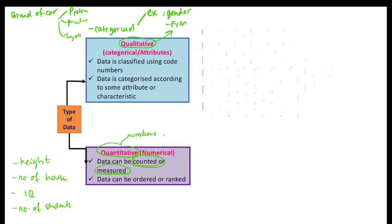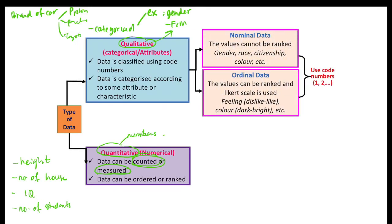Qualitative data can be divided into two types: nominal data and ordinal data. Nominal data consists of values that cannot be ranked. For example, gender — female and male — we cannot rank female and male, so gender is nominal data. Similarly, citizenship and race cannot be ranked, so they are nominal data.